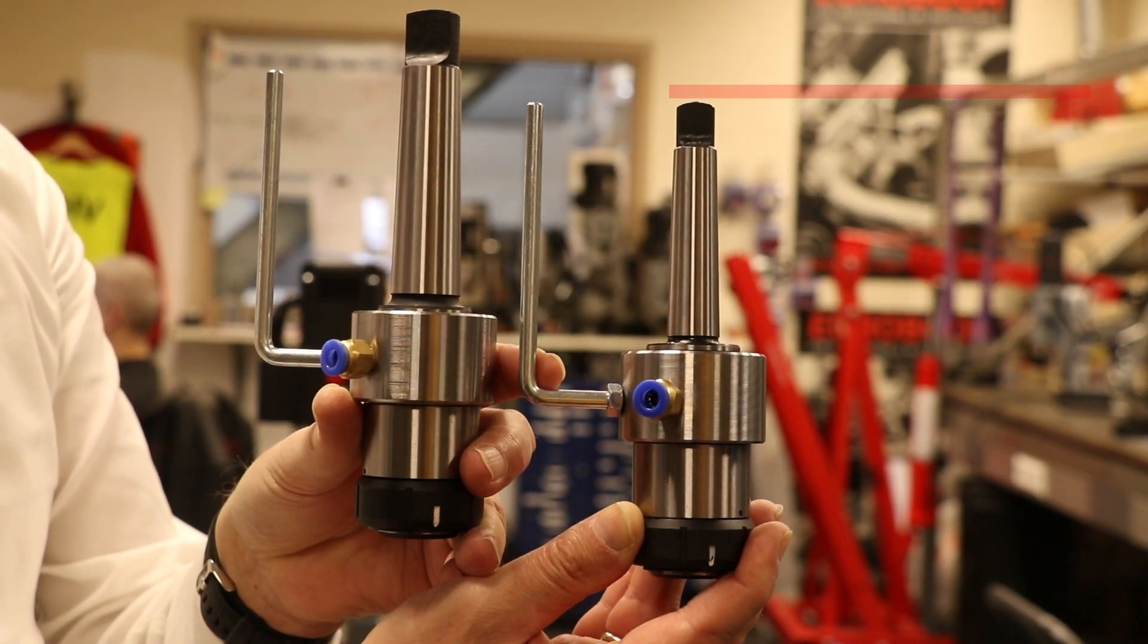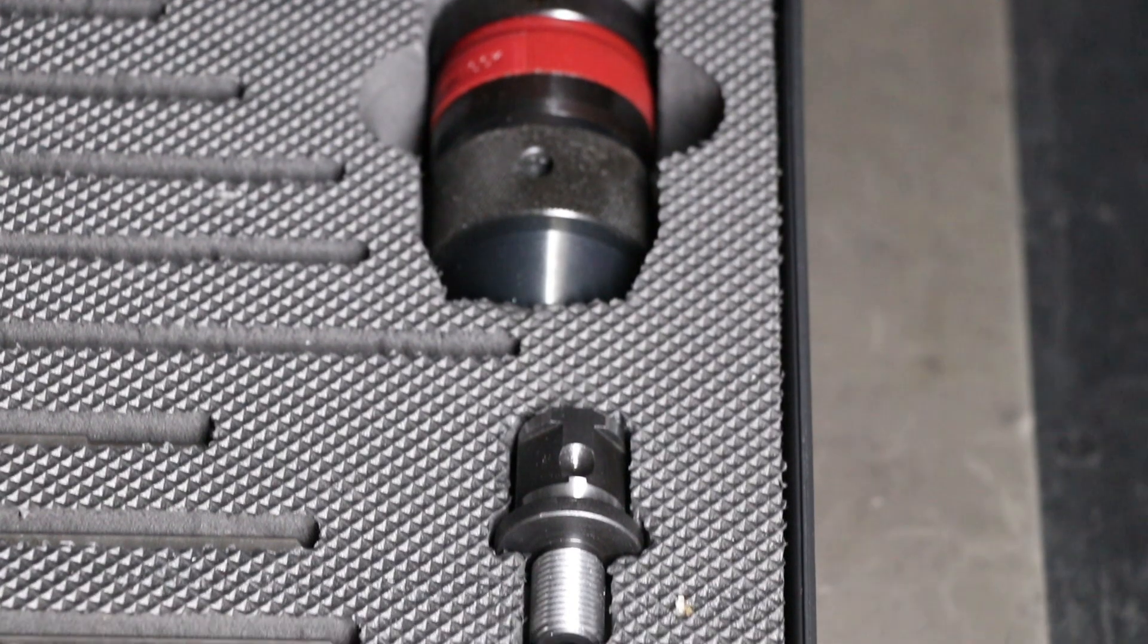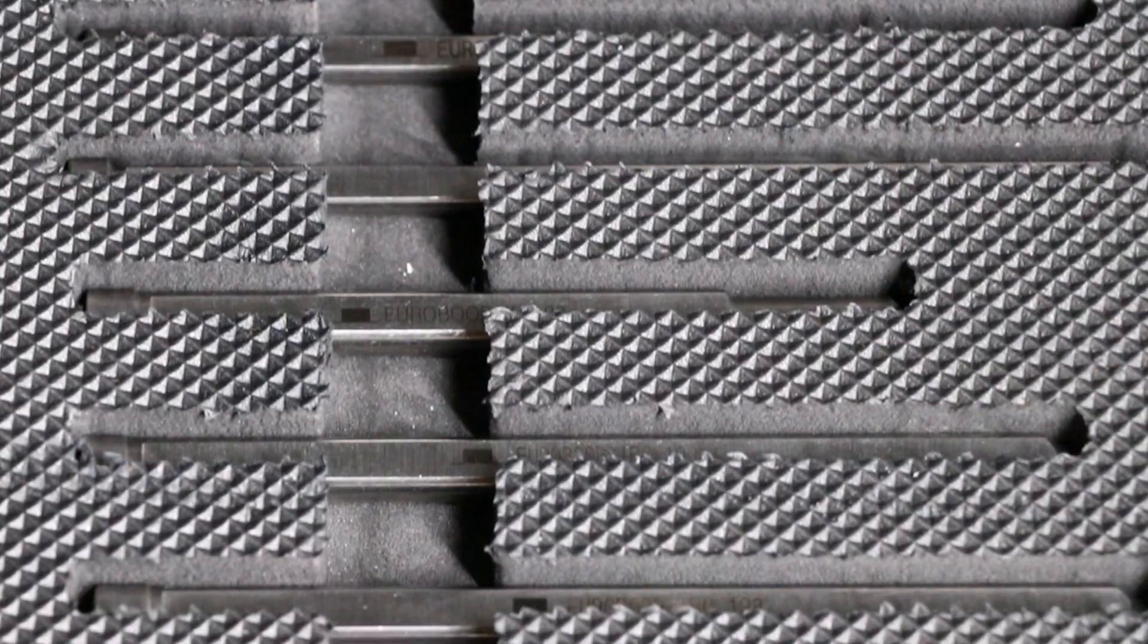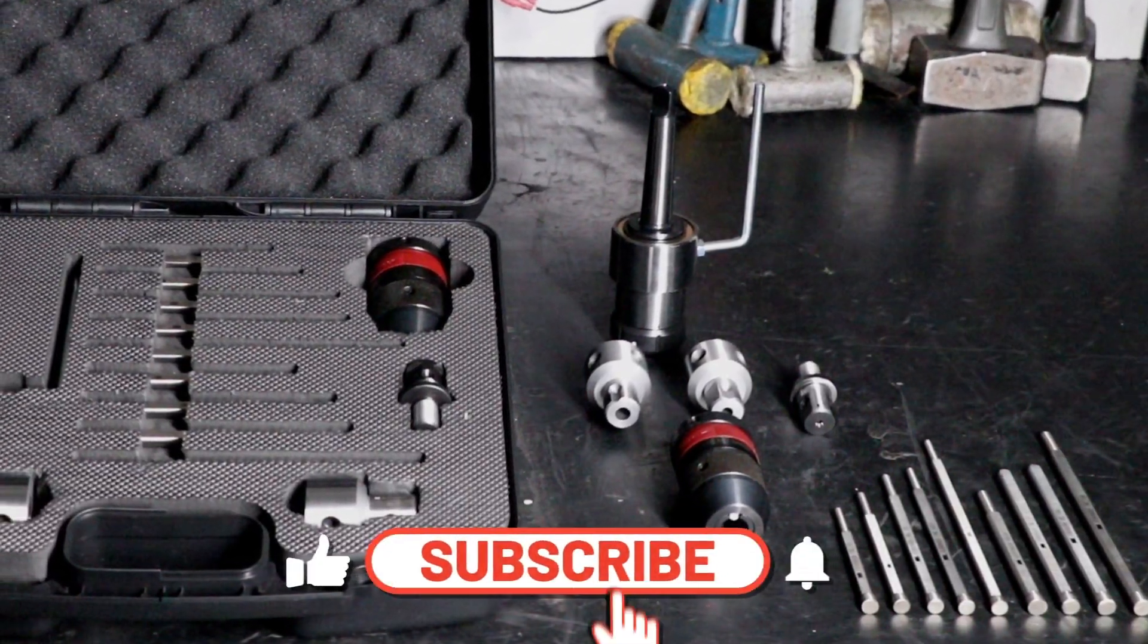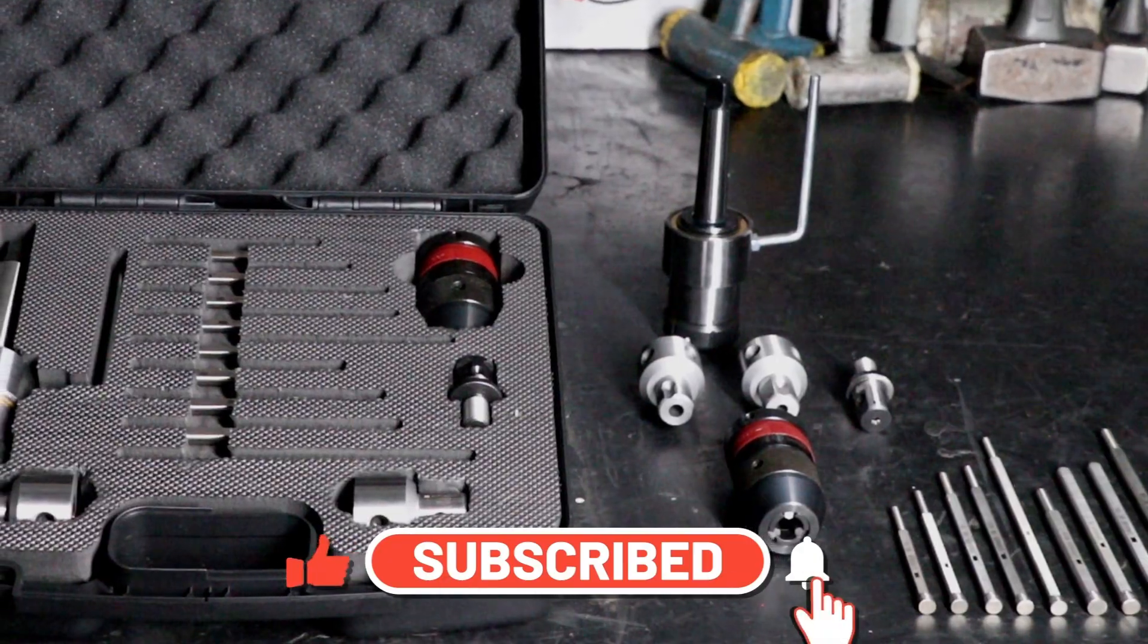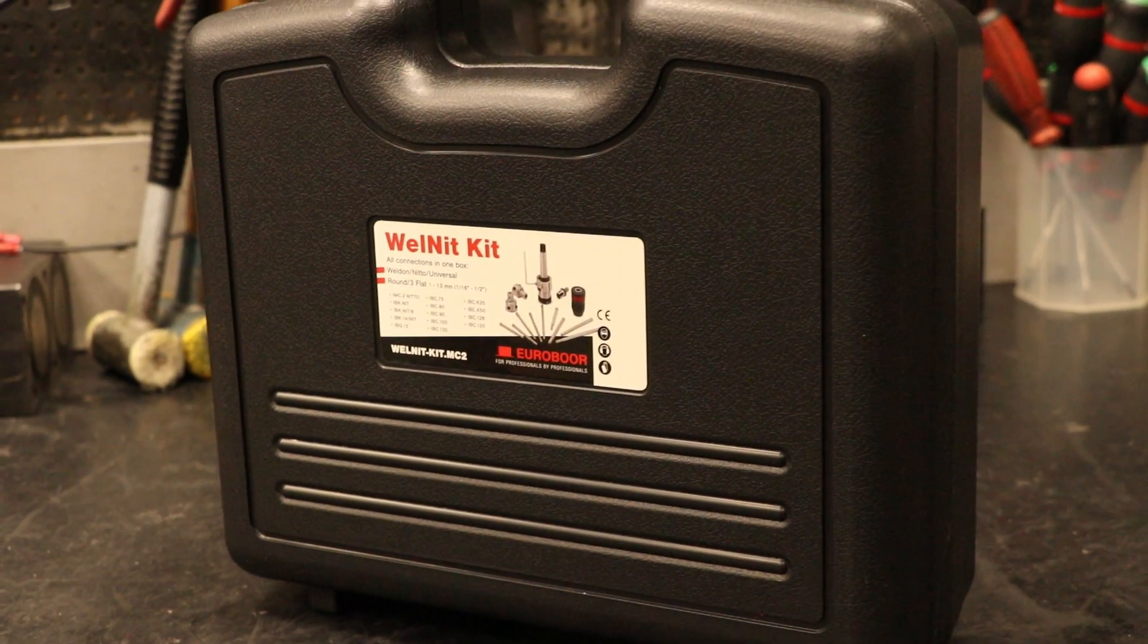The Welknit Kit is available in the Morse Conus 2 and the Morse Conus 3 version. The Welknit Kit makes you the most versatile and prepared metal worker for the job. Don't forget to like and subscribe to our YouTube channel and click that bell so you stay up to date on our latest product videos, repair videos and more. See you next time!